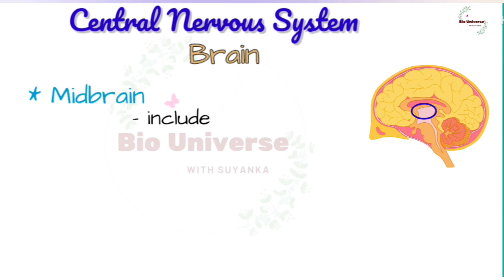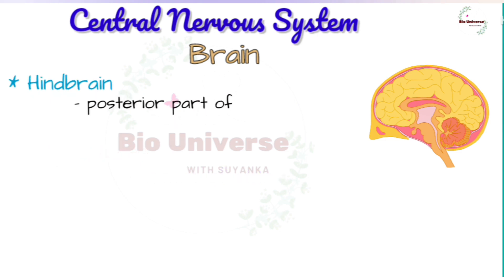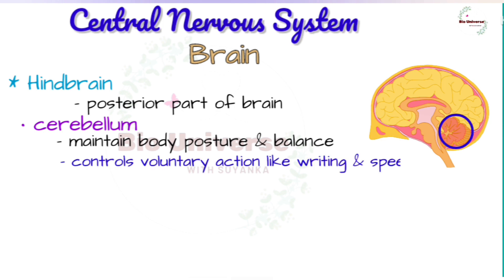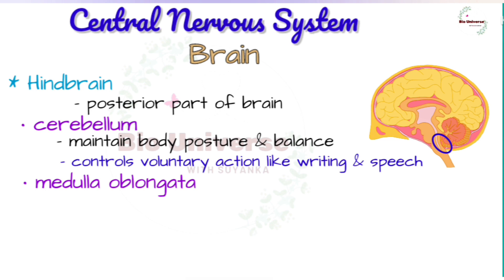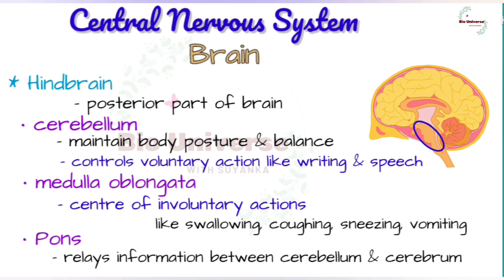The midbrain includes optic lobes, which are the centers of vision. The hindbrain is the posterior part located below the forebrain. It consists of the cerebellum and medulla oblongata. The cerebellum is the coordination center and maintains the body's posture and balance; it also controls precise voluntary actions such as those involved in writing and speech. The medulla oblongata is the center of involuntary actions like swallowing, coughing, sneezing, salivation, vomiting, heartbeat, and breathing.